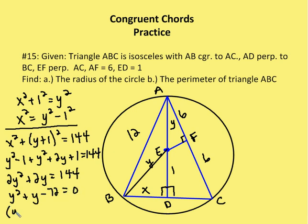This factors to (Y + 9)(Y − 8) = 0, giving values of Y = −9 and Y = 8. Since Y cannot be negative — it's a length — Y equals 8. So with Y equal to 8, I need to find the perimeter of triangle ABC. AE is 8 and ED is 1, so AD equals 9.